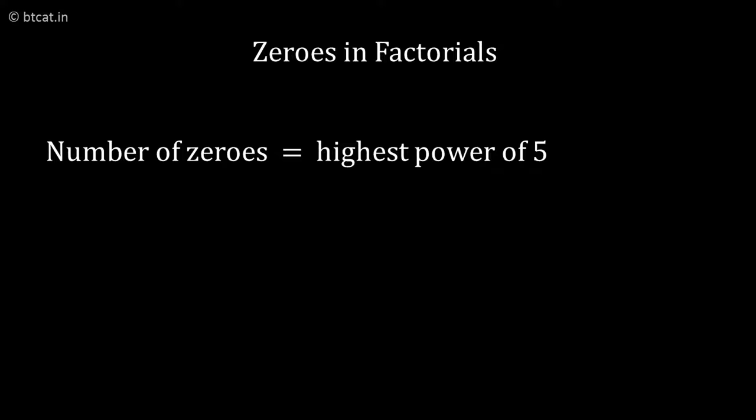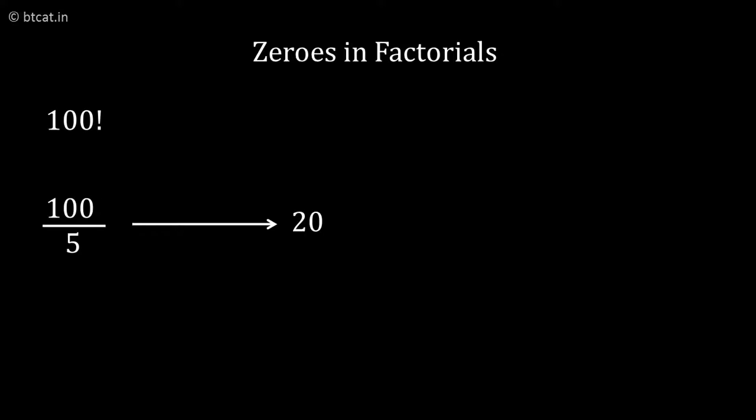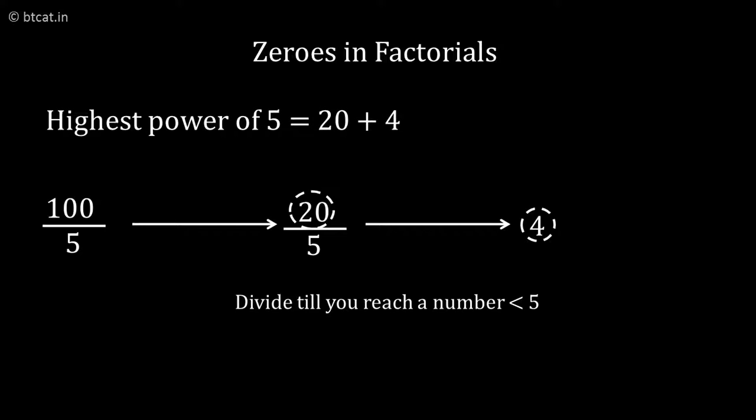Which is not difficult to find. How so? For 100 factorial, when we want to find the highest power of 5, we write 100 and we just keep on dividing by 5. When we divide by 5 we get 20, we again divide 20 by 5 we get 4. We do this operation till we get a number less than 5. So in this case, 4 is okay with us. Now we will add up 20 plus 4.